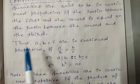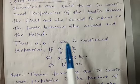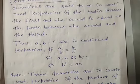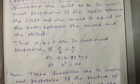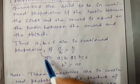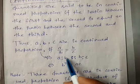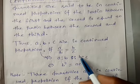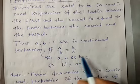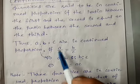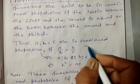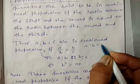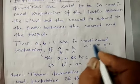Thus, if we have A, B, C in continued proportion — ये तीन quantities continued proportion में हैं — then ratio of A (first and second) is equal to ratio of second and third. अब इसको हम convert करेंगे।